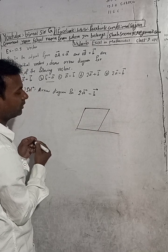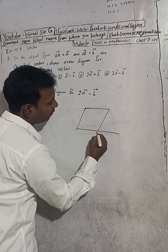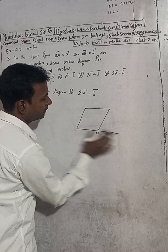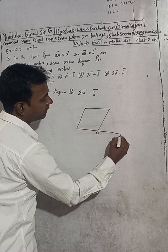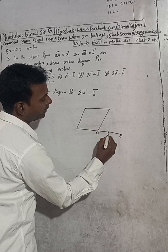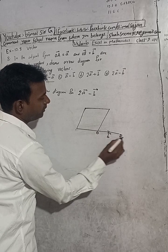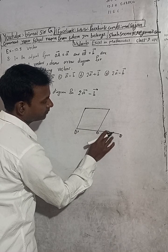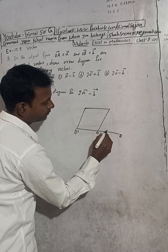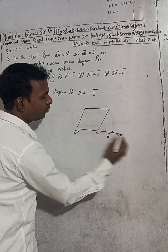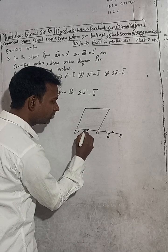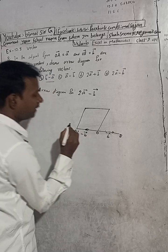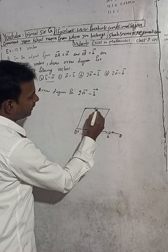We have extended this line because b is minus b vector — that's why we write this. Now from the origin, extend this line equal to this length. Suppose this is O, this is our b vector, so OB is equal to b vector. Then this will be B dash, and OB dash is minus b vector — this is also called minus b vector because opposite sides are parallel.